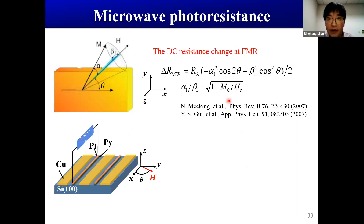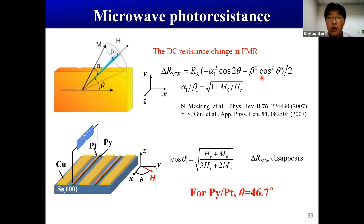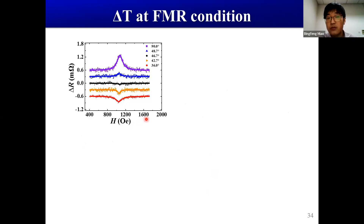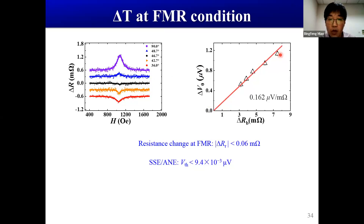Luckily, we find that the heating effect is independent of the in-plane direction of the magnetic field, while the microwave photoresistance has a very specific angular dependence. With the known parameters, we calculate that the microwave photoresistance disappears for the permalloy/platinum bilayer at around 46°. At this certain angle, any residual resistance increase can be ascribed to the thermal part, which we found is very small — almost within the error bar of our experiments. With the help of this scaling curve, we estimate the thermal signal at the ferromagnetic resonance condition is less than 0.1% of the spin-pumping signal.